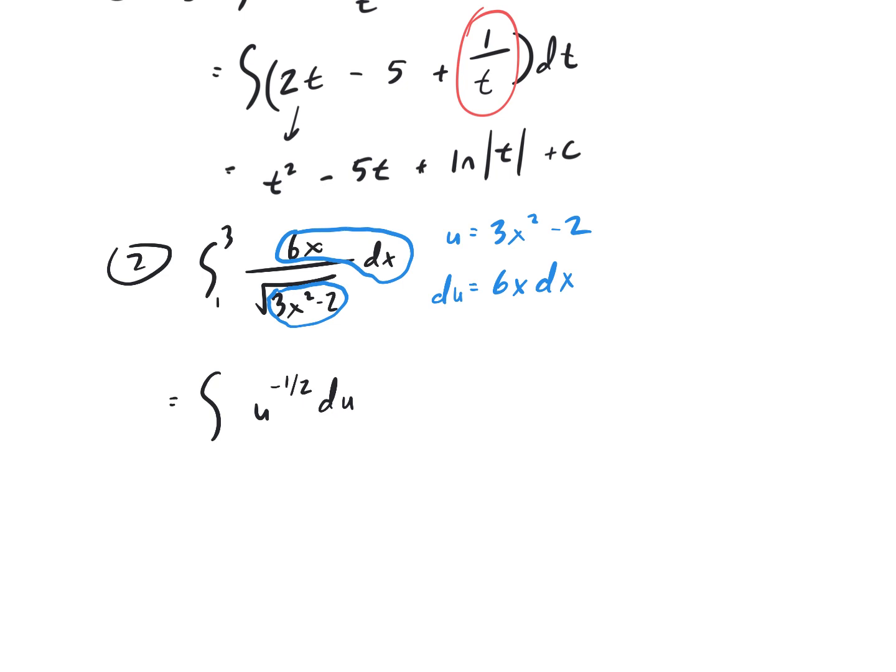After the substitution, I have that this integral is equal to u to the negative 1 half du. I took that square root up out of the denominator and wrote it with an exponent because I know the next step is to use the power rule. I'm going to rewrite my bounds. The bottom bound is 3 times 1 squared minus 2, which would be 1 again. My new top bound, 3 times 3 squared minus 2. 3 squared is 9. 9 times 3 is 27. Minus 2 is 25. So my new bounds, my blue bounds, are from 1 to 25.